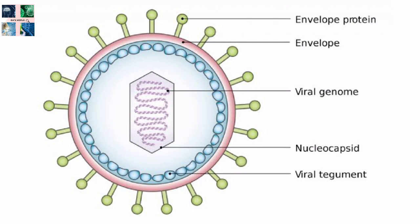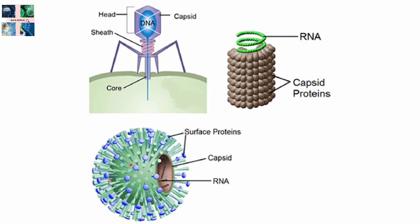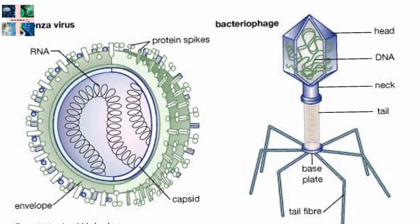All viruses have a nucleocapsid which is composed of nucleic acid surrounded by a protein capsid. The protein coat functions as a shell to protect the viral genome from nucleases, and during infection it attaches the virion to specific receptors exposed on the prospective host cell. Capsids are formed as single or double protein shells and consist of only one or a few structural protein species. The proteins used to build the capsid are called capsomeres. The nucleic acid together with the capsid forms the nucleocapsid. Some viruses have a membranous envelope that lies outside the nucleocapsid, and those virions having an envelope are called enveloped viruses.